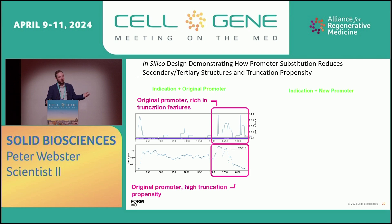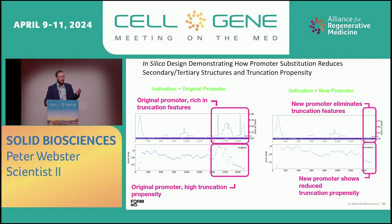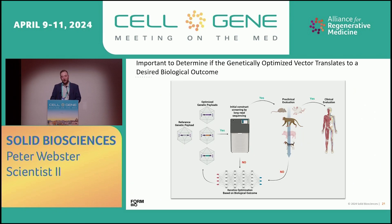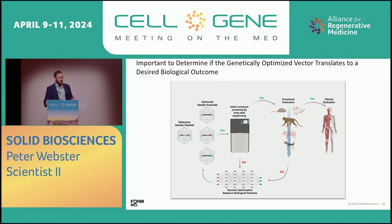We have our coding region plus an original promoter with a significant amount of predicted secondary structure. Based on the AI analysis, we were able to switch out that promoter with one that has fewer predicted secondary structures and truncations, allowing for a cleaner DNA profile. Now that we've modeled what our DNA constructs look like, we take them into wet lab validation — moving forward with in vitro and in vivo studies. This has allowed us to narrow down from tens or hundreds of constructs to only the constructs likely to work best, allowing for much faster development and acceleration of our programs.